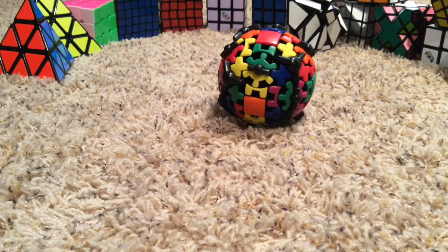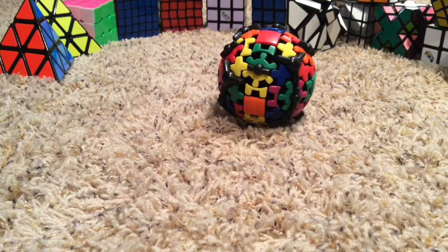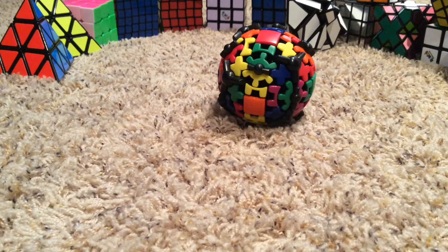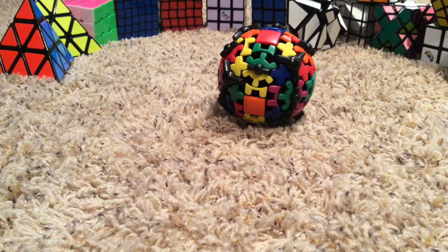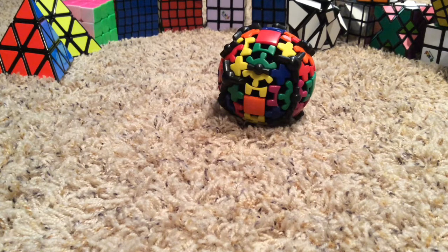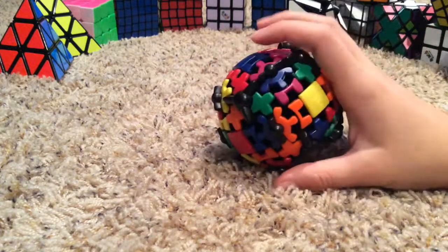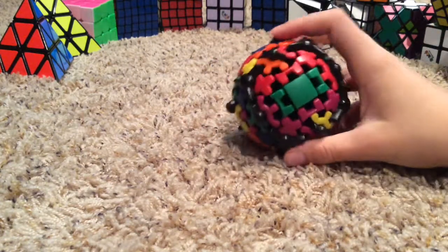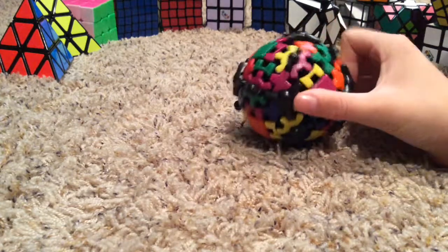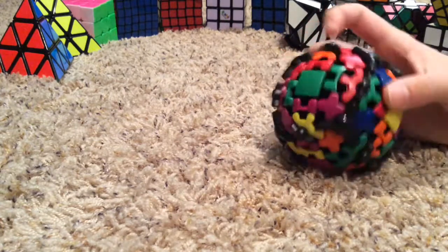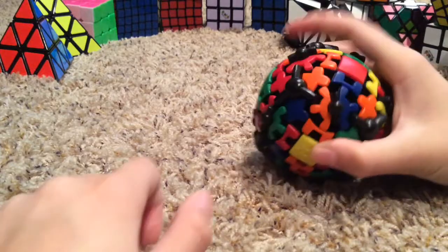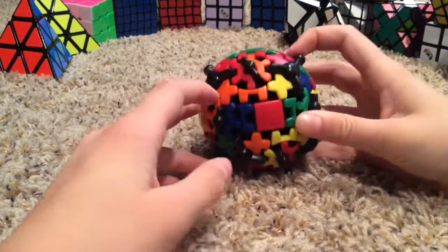Okay so now that it's scrambled we're going to solve it just like I said we're putting all the corners in the correct position and matching up with the centers. So as you see there is no white for this cube, still 6 sides but we use red for this. So once you get two matched up then all of them are done.